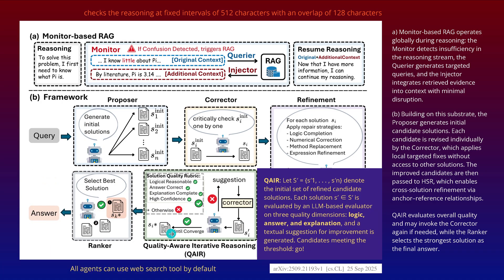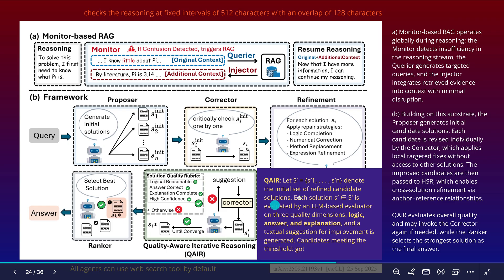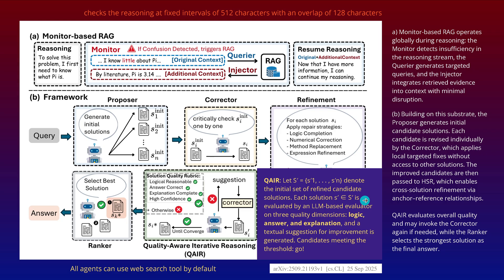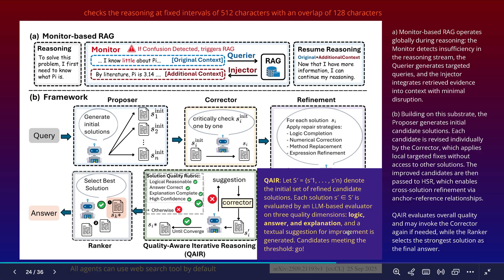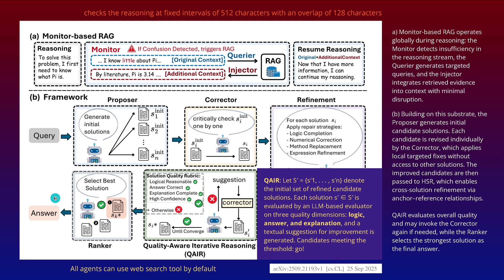We then move to the iterative reasoning process with an LLM-based evaluator agent. The team defines three quality dimensions: logic, answer, and explanation, plus a suggestion for improvement. We have a specific threshold across multiple dimensions — if the answer crosses the threshold, you get a go: select the best solution via a ranker and re-ranker, as you know from classical RAG systems, and you get a final answer.